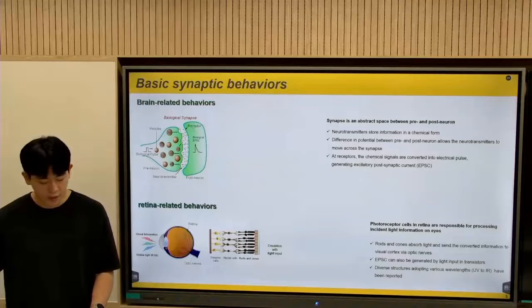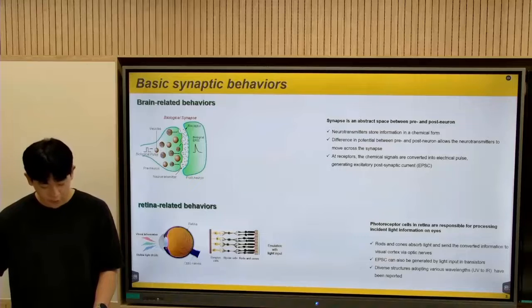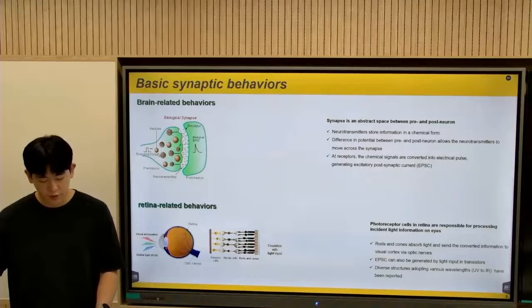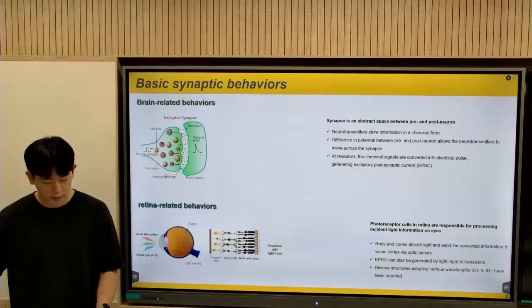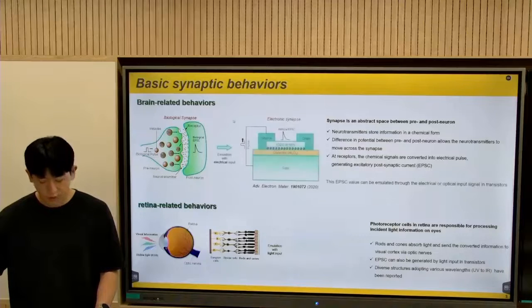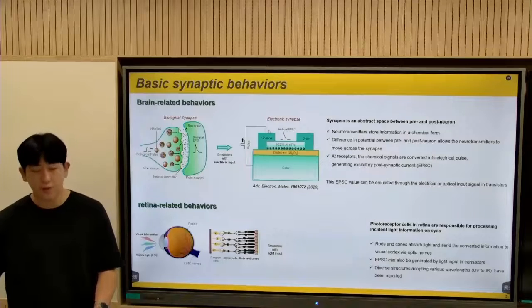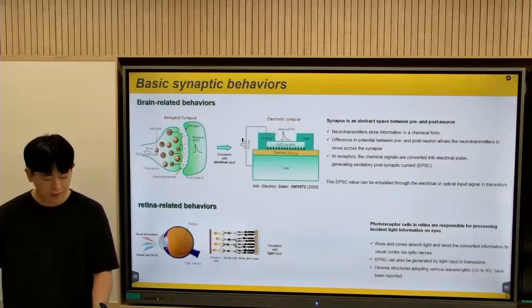As you can see the image here, each end of the neuron can be defined as pre- and post-neuron, and the synapse is an abstract space between them. First, the potential difference between the neuron drives the neurotransmitters movement, then the chemical information is converted into electrical pulse generating post-neuron current. This current generation could be closely mimicked by inducing bias to oxide-based transistors.